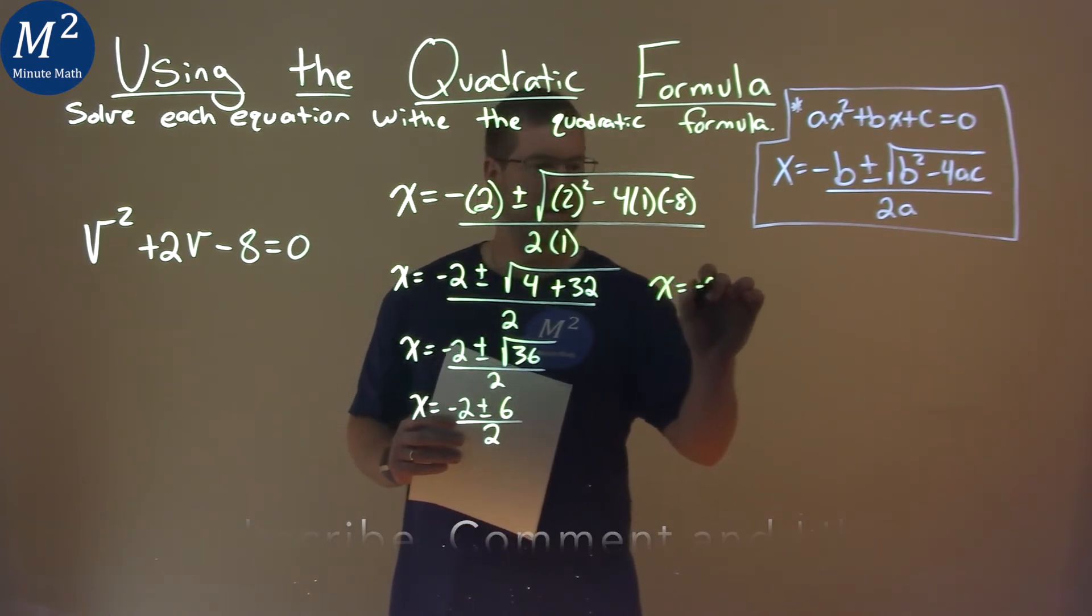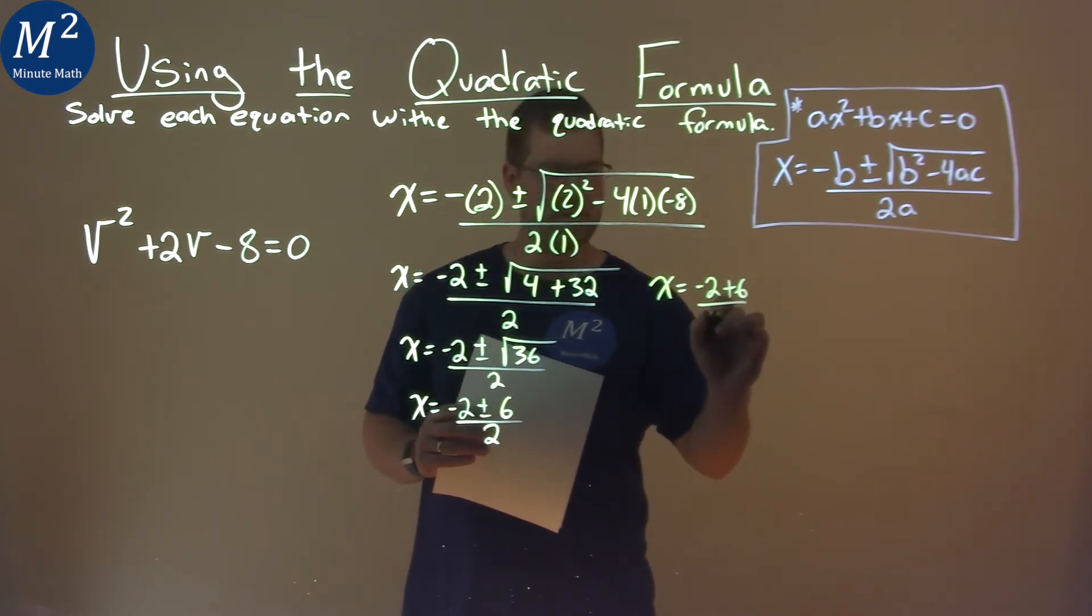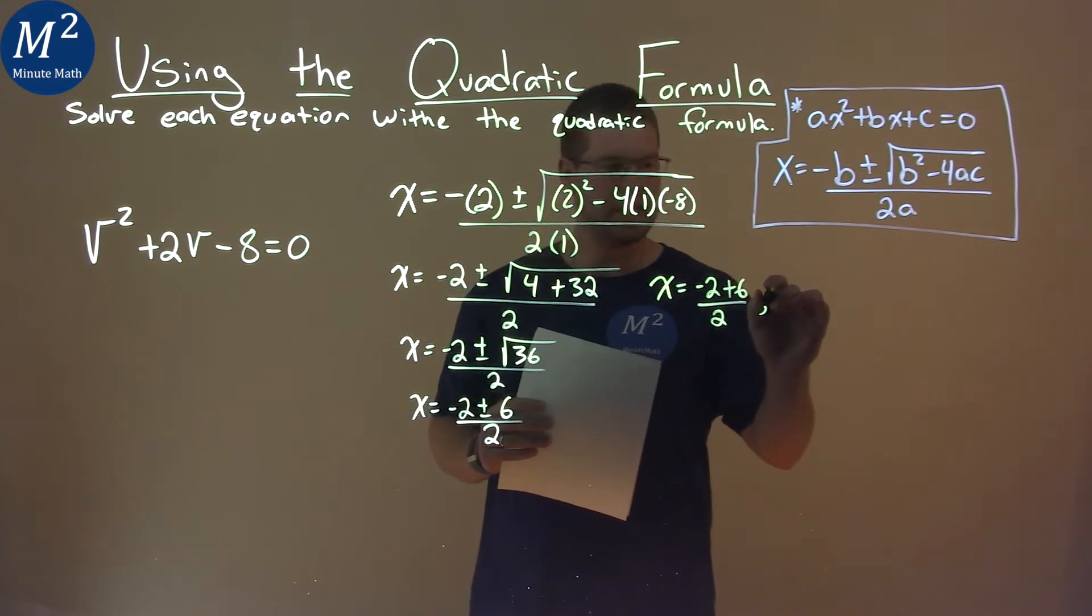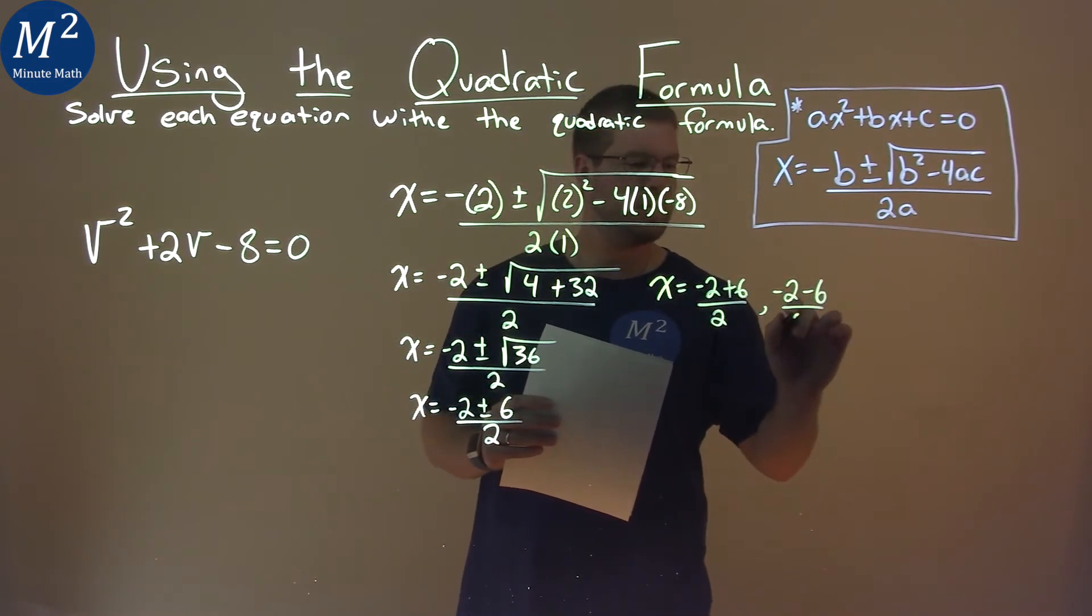We have x equals a negative 2, plus 6, over 2, and x equals a negative 2, minus 6, over 2.